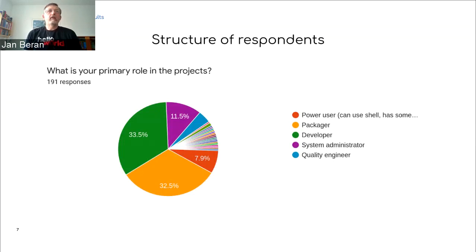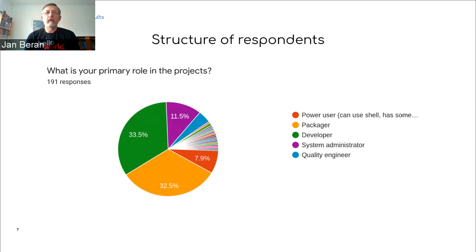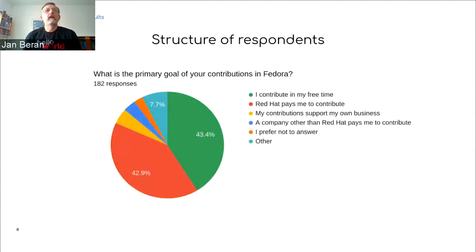We also asked about the role of respondents, because it's important to understand the audience. There was 33% developers and the same amount of packagers, meaning 66% of people are involved in Linux development or packaging in some way. We know that people combine their roles — if somebody's primary role is developer, that person can also be a packager and vice versa.